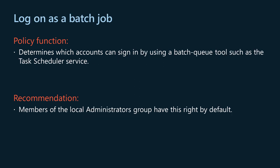The logon as a batch job policy setting determines which accounts can sign in by using a batch queue tool, such as the Task Scheduler service. When you use the add scheduled task wizard to schedule a task to run under a particular user name and password, that user is automatically assigned the logon as a batch job user right. When the scheduled time arrives, the task scheduler service logs on the user as a batch job instead of as an interactive user, and the task runs in the user's security context. Members of the local administrators group have this right by default. Use discretion when assigning this right to specific users and consider using separate accounts with specially crafted reduced privileges for scheduled tasks if necessary.